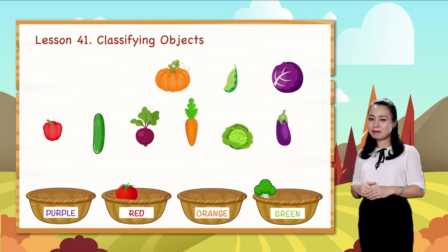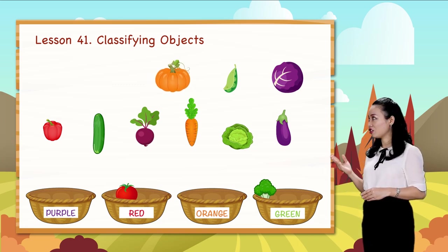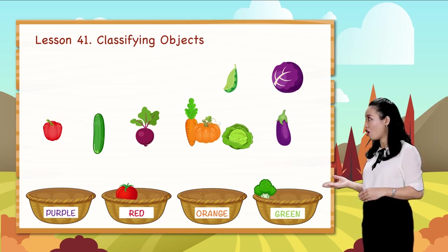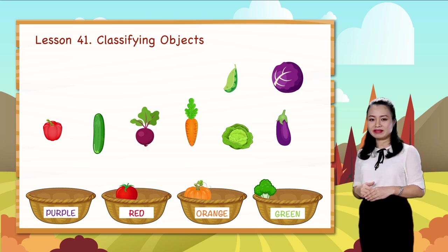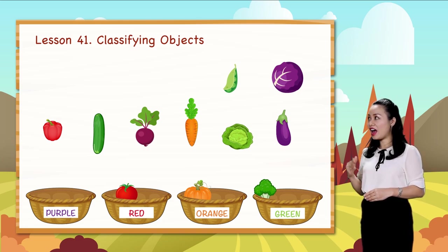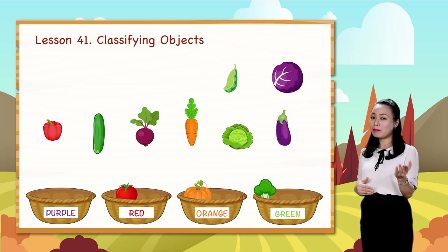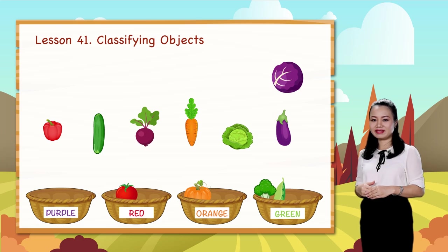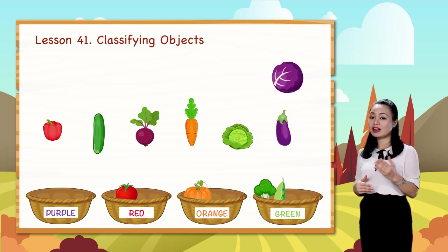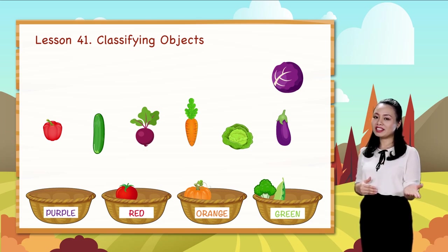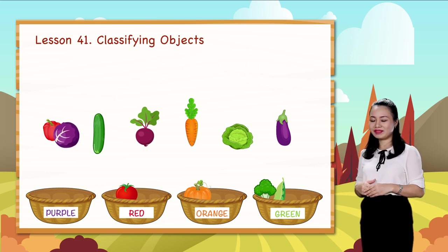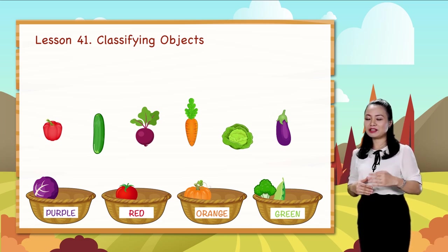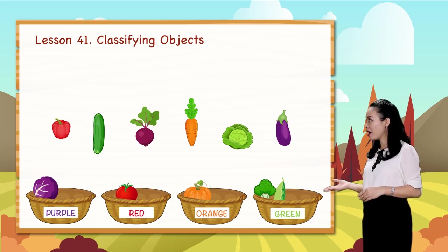This is a pumpkin. Let's paste it into the orange group. A pea — paste it into the green group. A purple cabbage, of course, paste it into the purple group. A bell pepper, paste it into the red group.